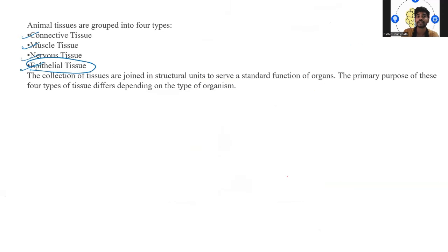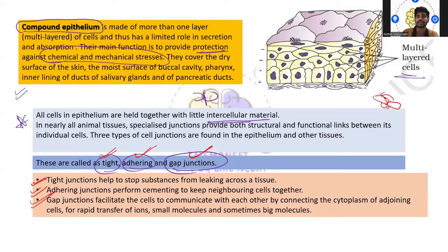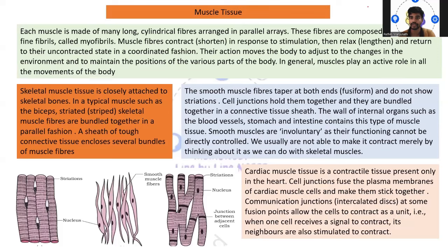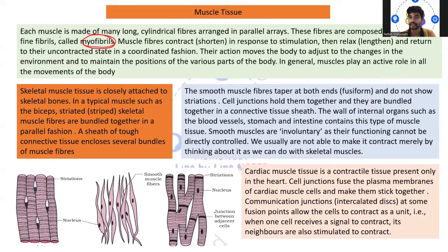We have learned about epithelial tissues, connective tissues, and now we will learn about muscle tissues. Each muscle is made up of long cylindrical fibers, which are arranged parallel — as you can see on the board, arranged in parallel arrays. These fibers are composed of a number of fine fibrils called myofibrils. Muscle fibers contract in response to stimulation.